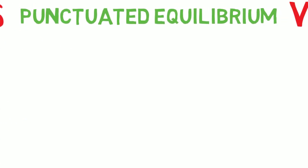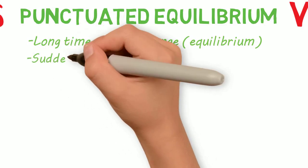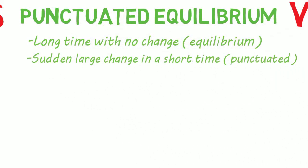With punctuated equilibrium, you have a long time with no change, that's the equilibrium, and then a sudden large change in a short amount of time, which is the punctuated portion.